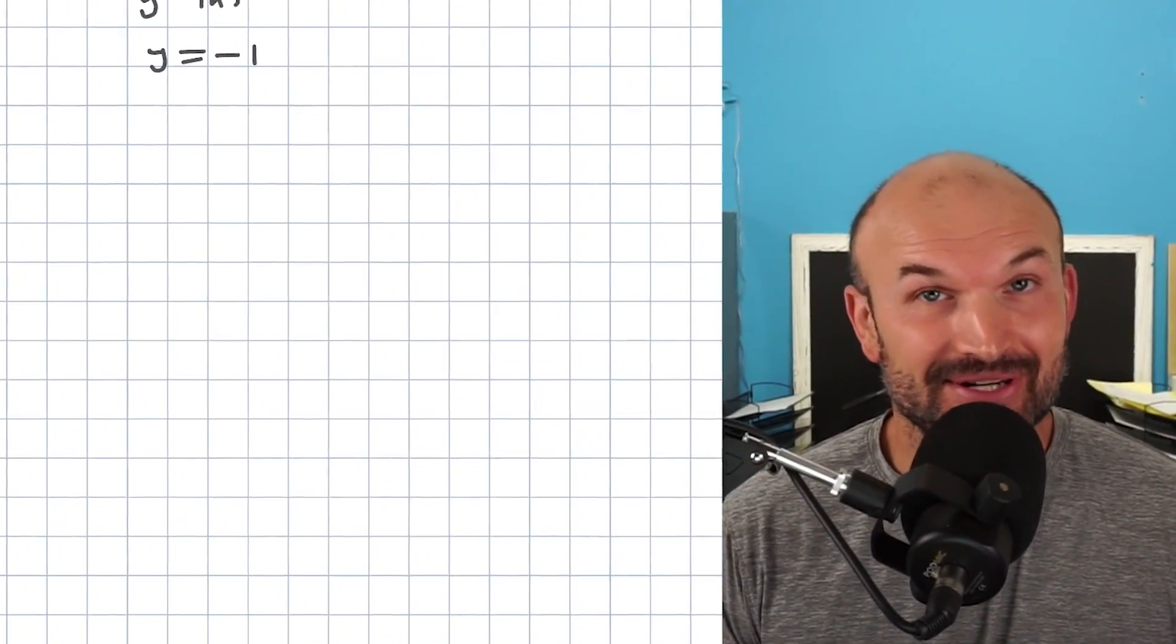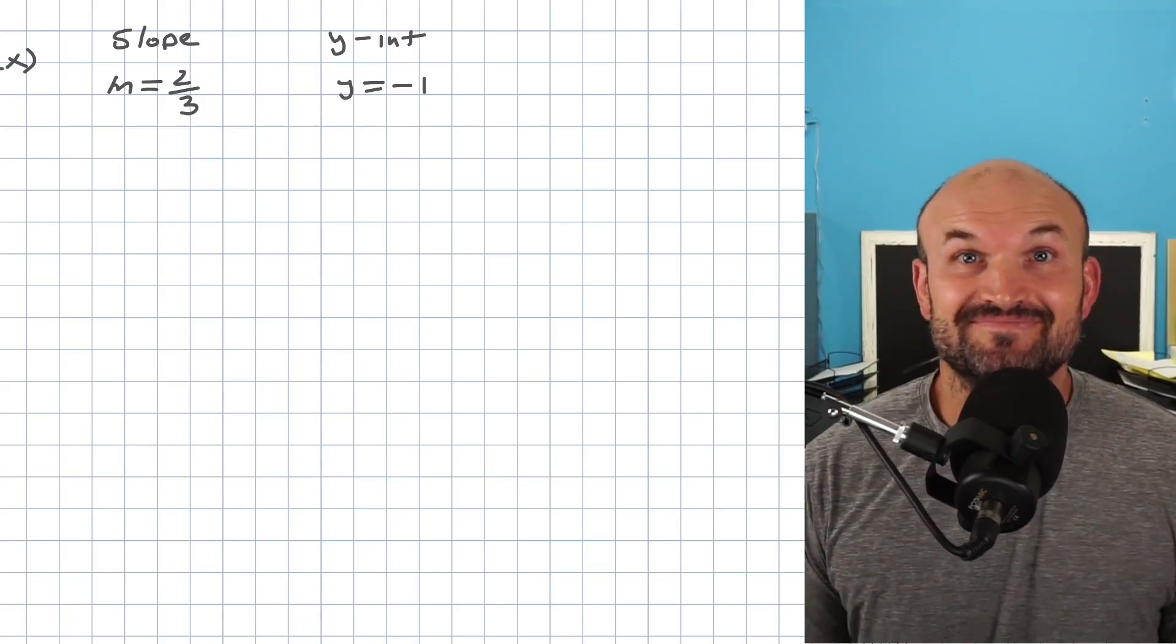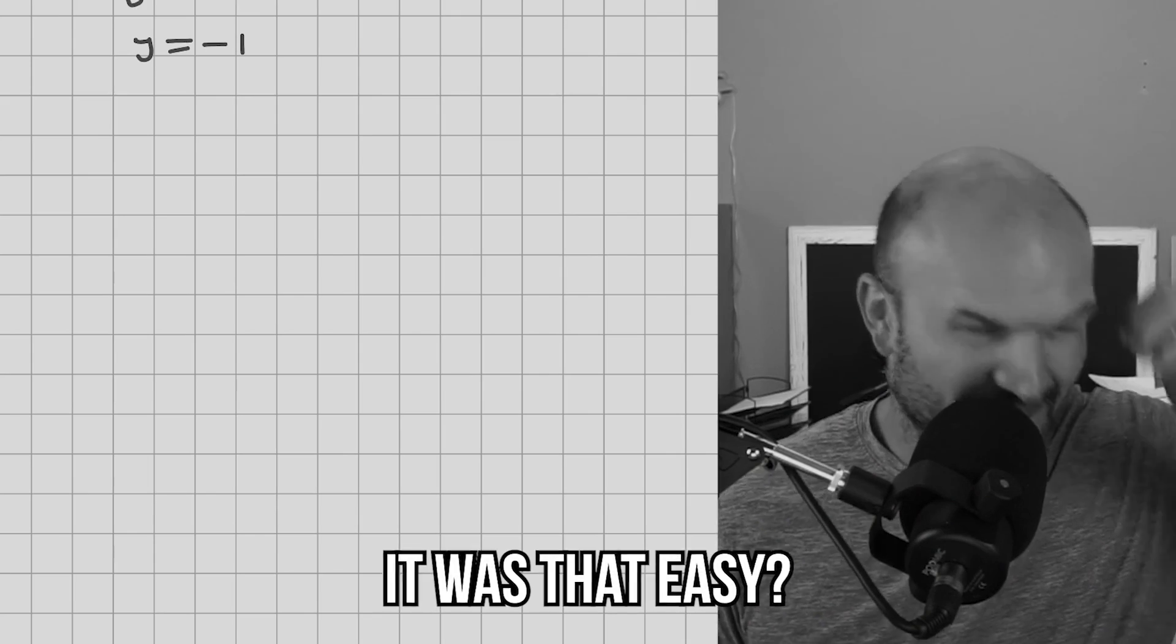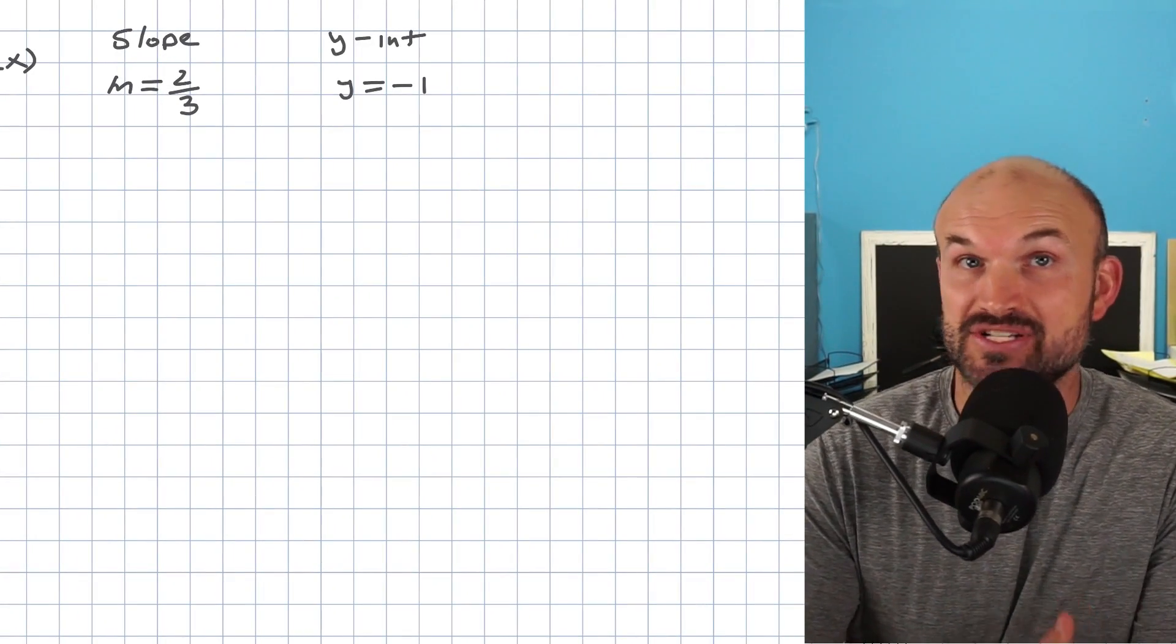The easiest way to write an equation of a line is when you're given the slope and the y-intercept. There you go, video's done. That's all you need to know. Who's that easy? But yeah, there's a lot of different ways that we can write the equation of a line.